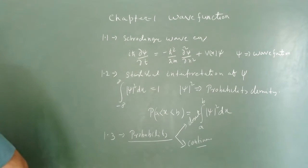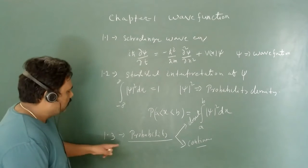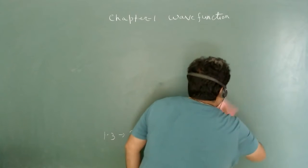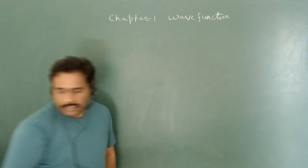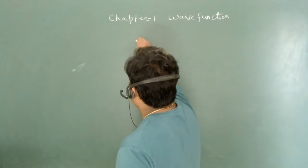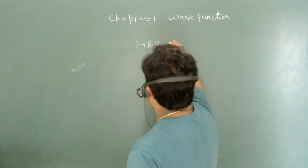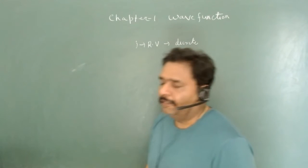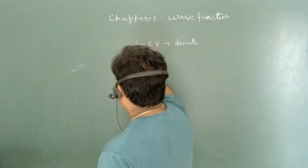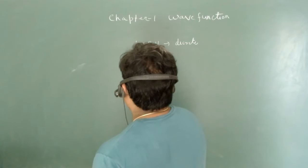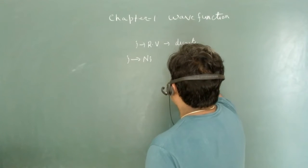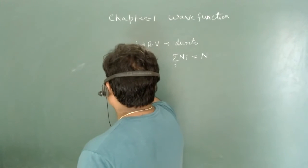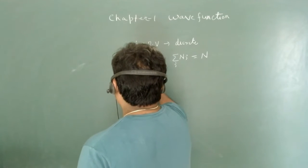Let's first discuss all this, then we will go for examples. In section 1.3, J is identified as a discrete random variable. The associated count with J is N_J, and summation of N_J over all J gives the total number of counts. The probability of getting J is N_J divided by N.